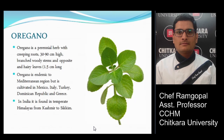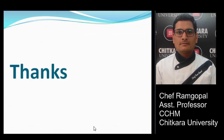Oregano is a herb 30 to 90 centimeters high with branched woody stems and hairy leaves. It is endemic to the Mediterranean region but is cultivated in Mexico, Italy, Turkey, Dominican Republic, and Greece. In India, it is found in temperate Himalayas from Kashmir to Sikkim. Oregano is popularly used in Italian cuisine. These are the different kinds of herbs discussed today — stay safe, stay healthy, thank you.